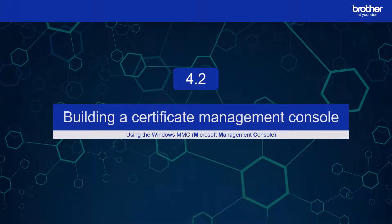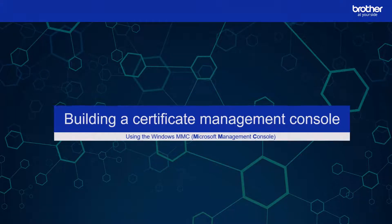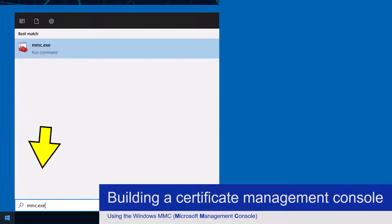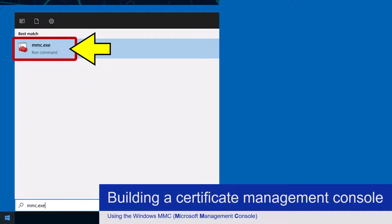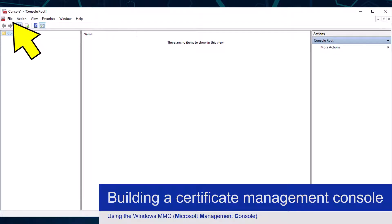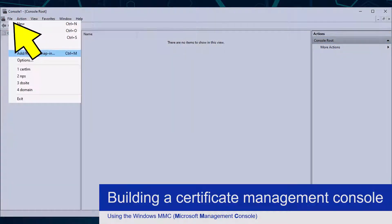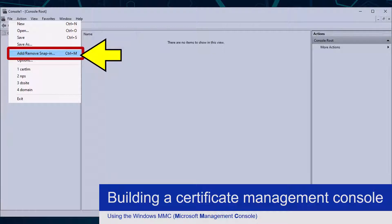I now need to do a few things with certificates. To make this process easier I will create a custom certificate management console. To do this I need to search for and open the Microsoft Management Console — MMC.exe. Right now it is empty. To add the required certificate options to it I need to click the File option from the menu, followed by the Add/Remove Snap-in option.